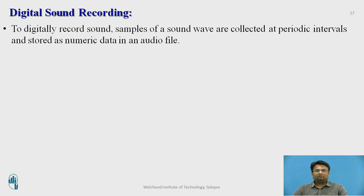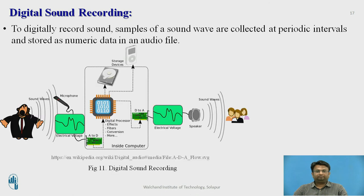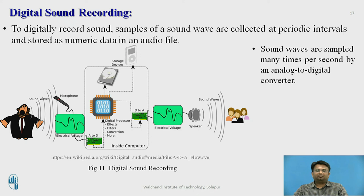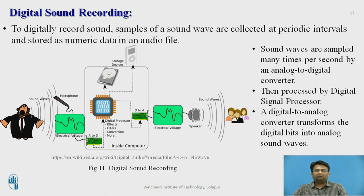To digitally record sound, samples of the sound waves are collected at periodic intervals and stored as numerical data in an audio file. The audio signal from the microphone is analog and is given to the analog-to-digital converter to convert it into the discrete digital domain. These digital values are given to the digital signal processor, which processes the information for adding effects and removing noise. These bits are then stored into storage devices. To retrieve the signal, the bits from storage are given to the digital-to-analog converter. The analog signal is amplified, filtered, and given to the speaker.